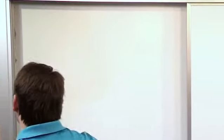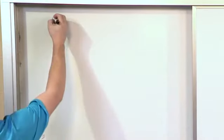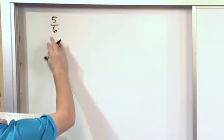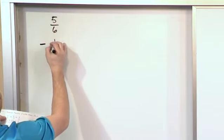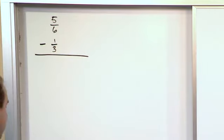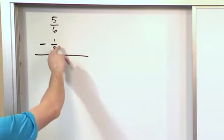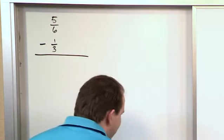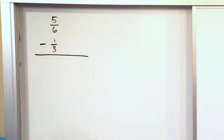So let's see how we do that when we have an actual problem. If we have 5 sixths and we're subtracting from it 1 third, the first thing we do is check do we have a common denominator between these fractions and we don't. We have a 6 up here and we have a 3 here. So just like for adding fractions, we need to change one or both of these fractions so that we get a common denominator.